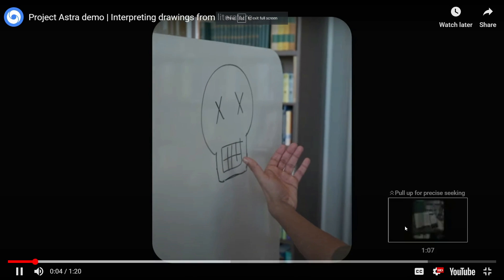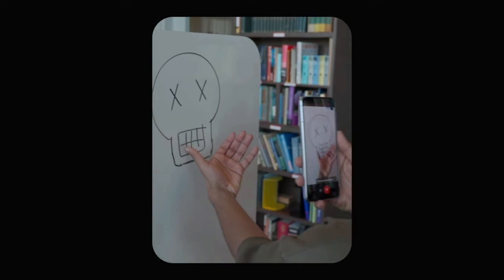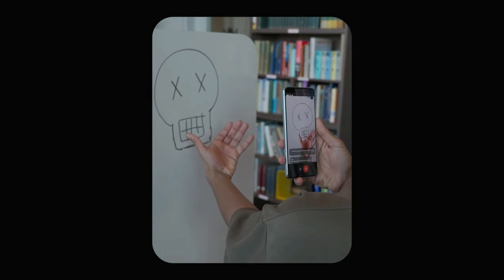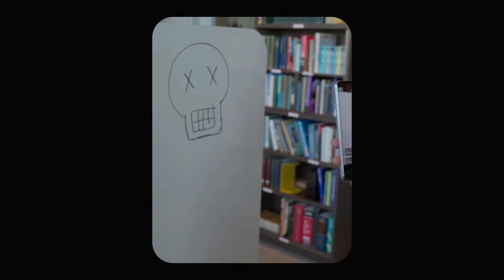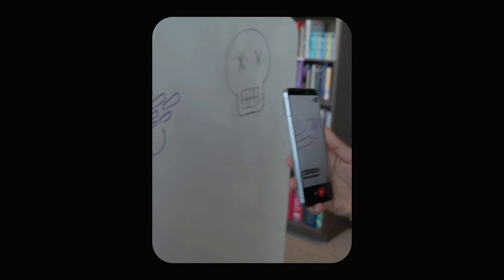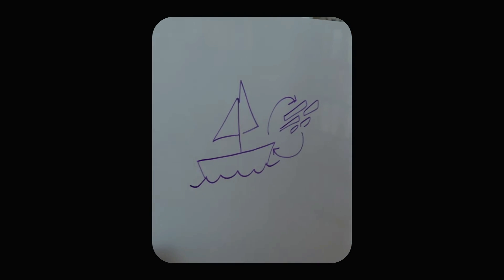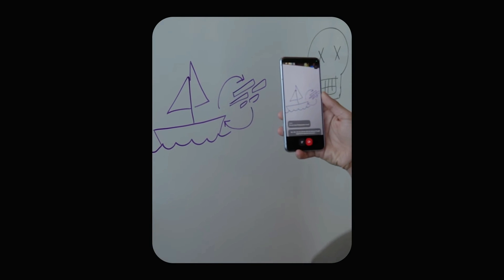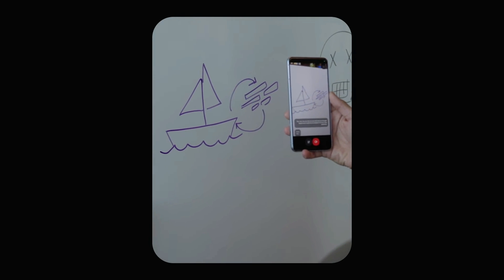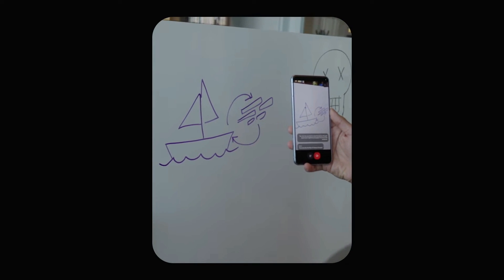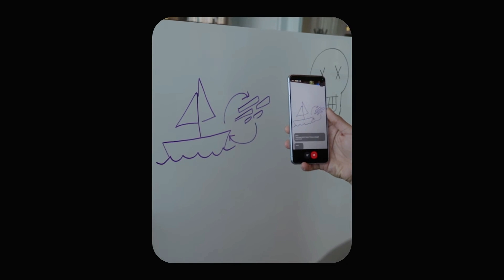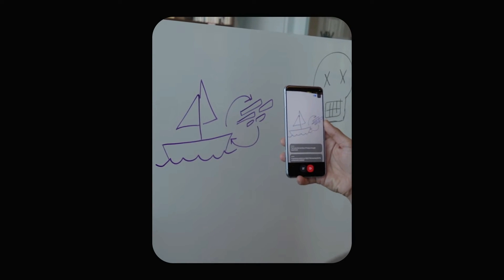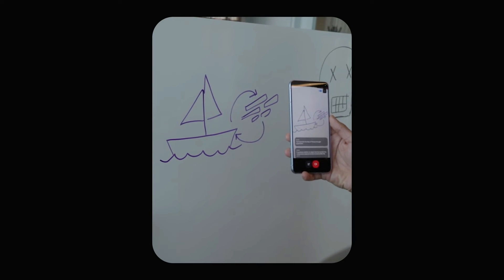In a third demo, an image of a skull reminds the AI of Hamlet. When shown a diagram, the AI identifies it as the Ship of Theseus thought experiment, explaining in one sentence: 'It questions whether an object that has had all of its components replaced remains fundamentally the same object.'